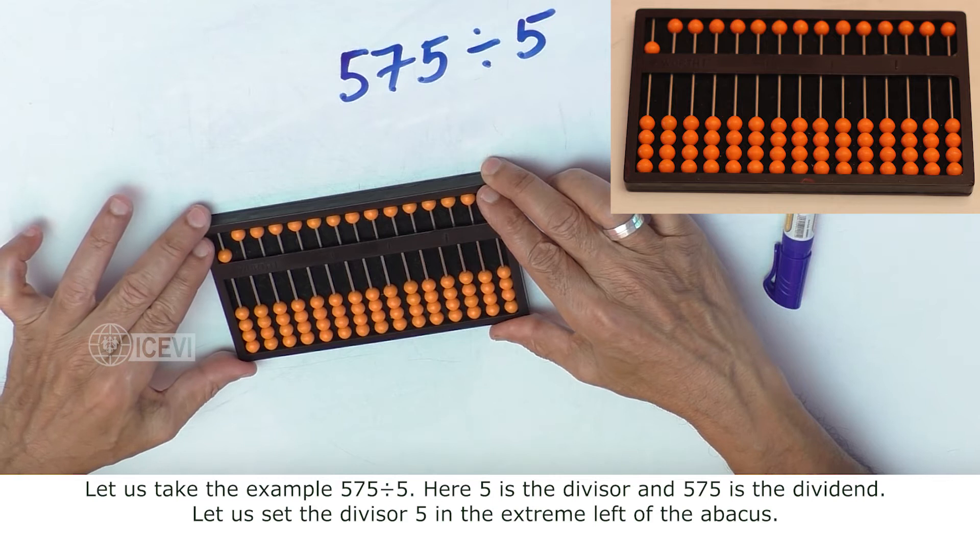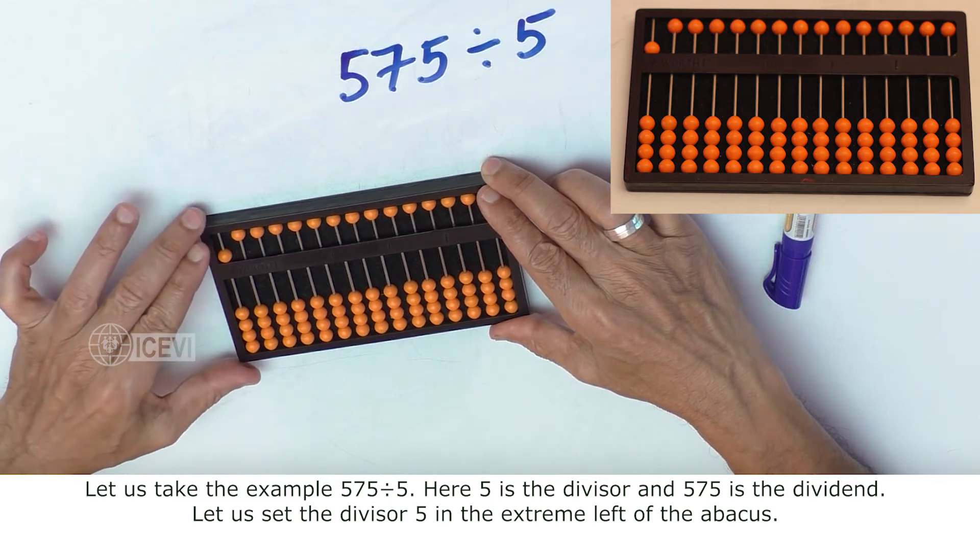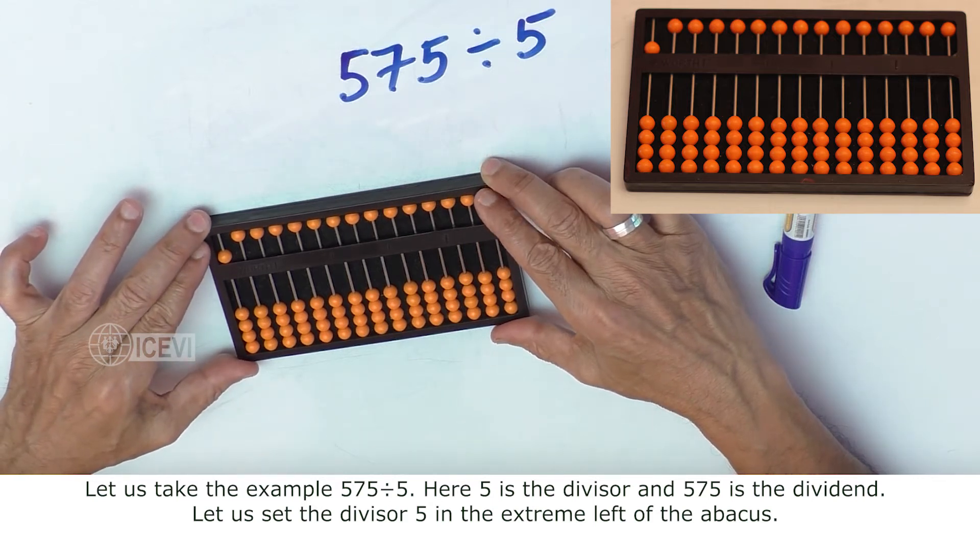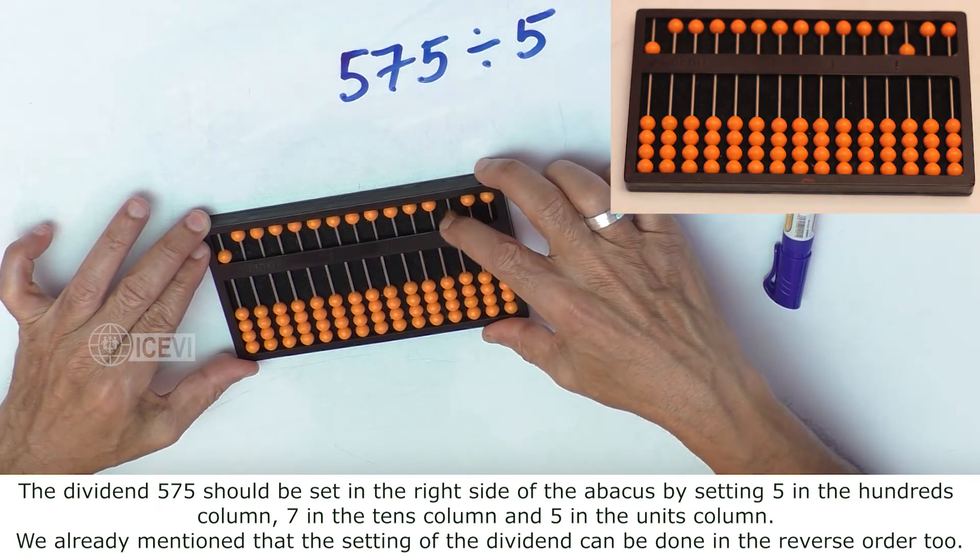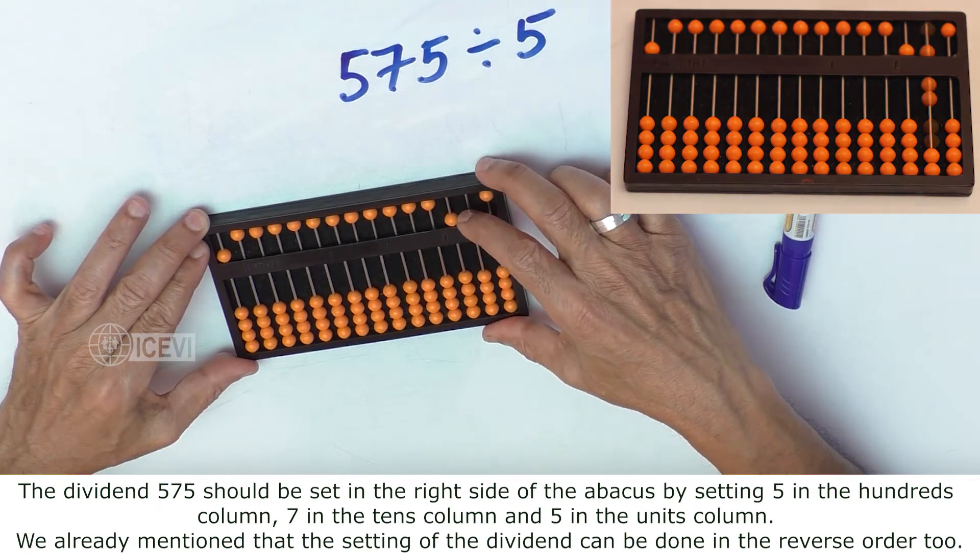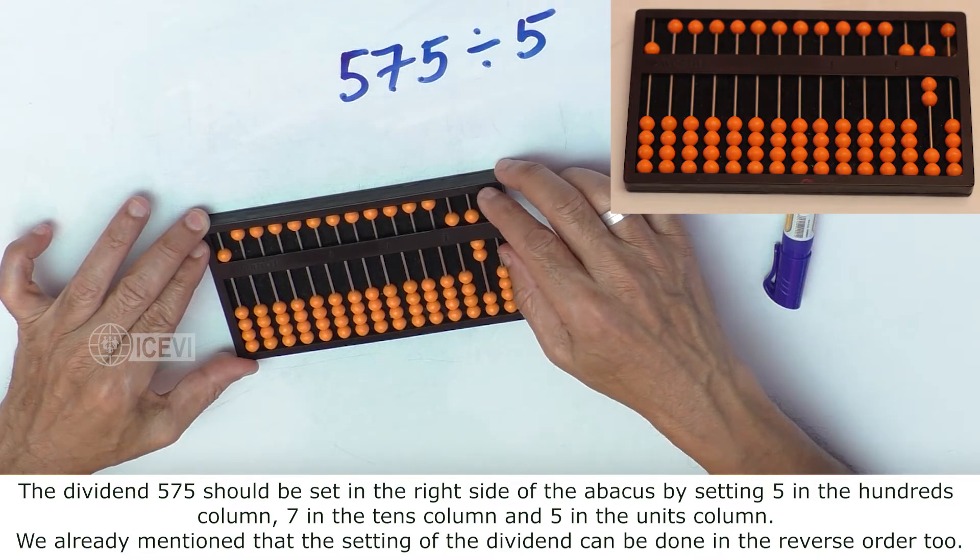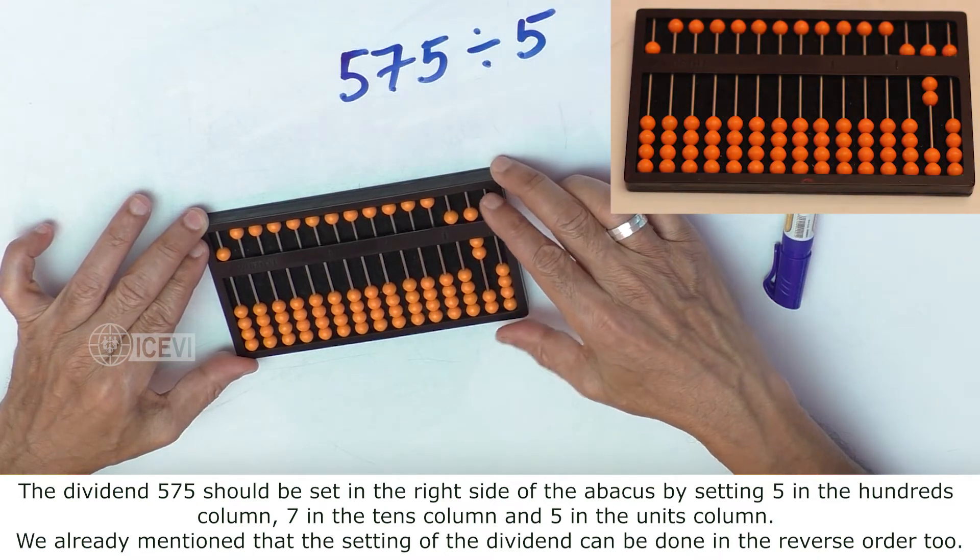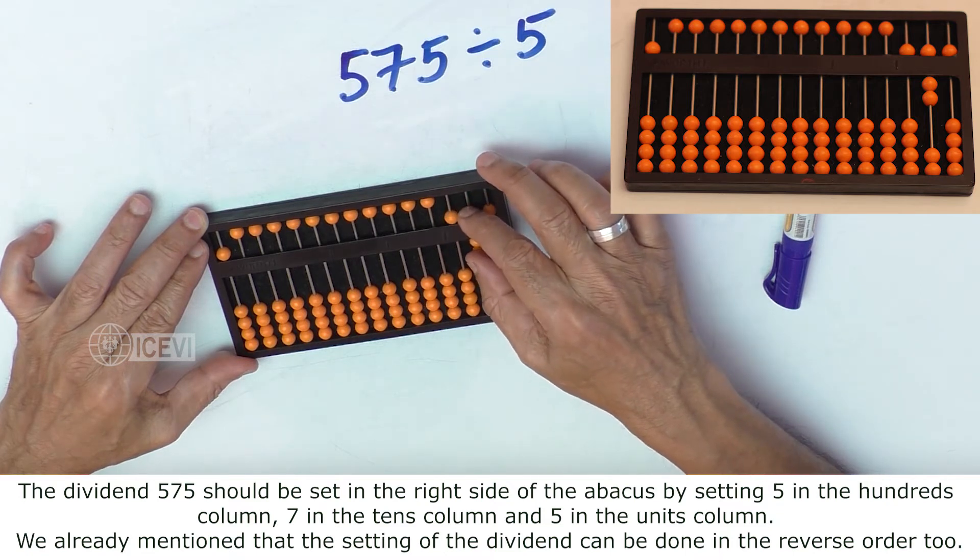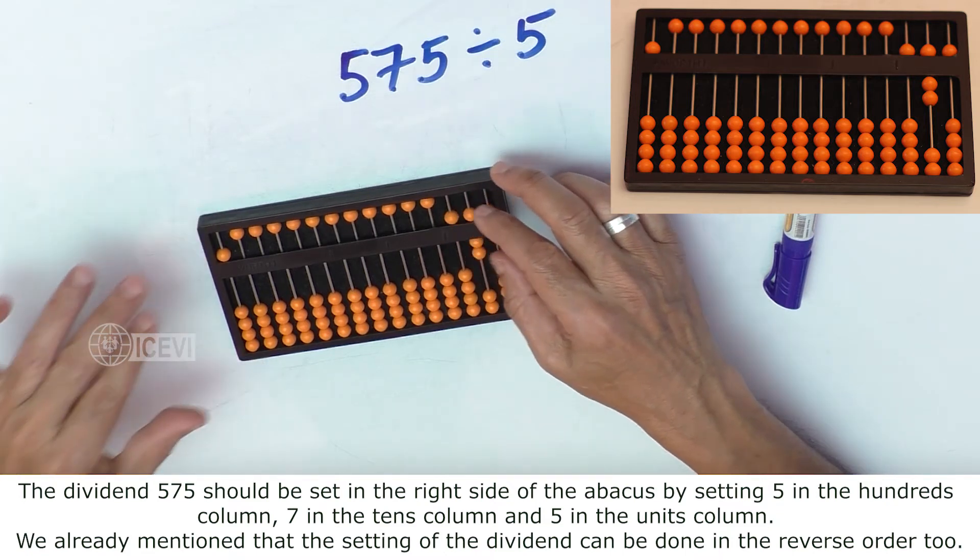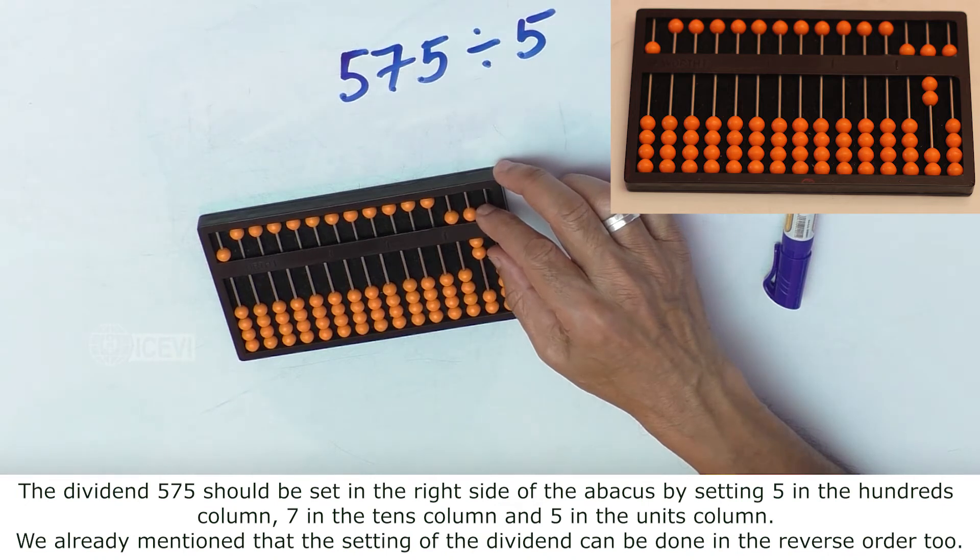Let us set the divisor 5 in the extreme left of the Abacus. The dividend 575 should be set in the right side of the Abacus by setting 5 in the hundreds column, 7 in the tens column, and 5 in the units column.